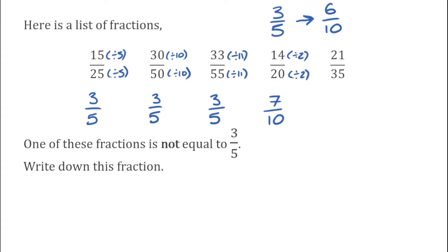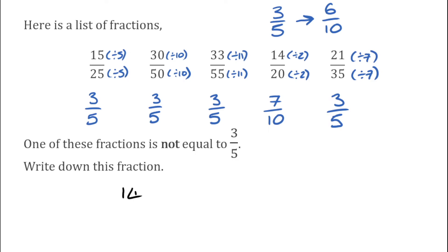We can also check by doing the last one: 21 over 35. The highest common factor of both is 7, so dividing top by 7 gives 3, and 35 divided by 7 gives 5. So that one is also 3 fifths. We've checked all our answers, so we know the odd one out is 14 over 20. The question says just write down the fraction, so remember to write down 14 over 20 as given in the original question — that would be our answer.